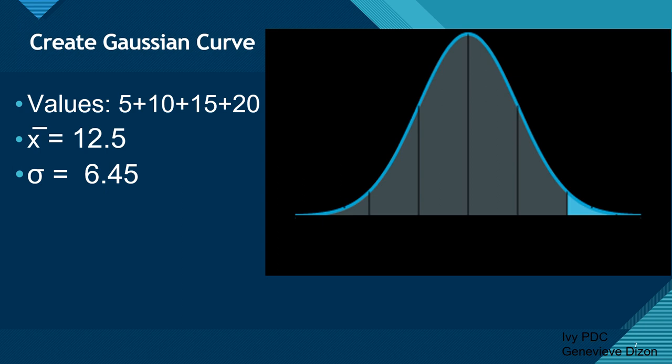Let's now create our own Gaussian curve using the values we had earlier for variance and standard deviation: 5, 10, 15, and 20. The mean is 12.5 and the SD is 6.5. To create a Gaussian curve, all we need are the SD and the mean. First, we place the mean at the center, as it is the central measure of central tendency. So our mean is 12.5. The standard deviation gives a standard interval from the mean, showing how values are dispersed from it.